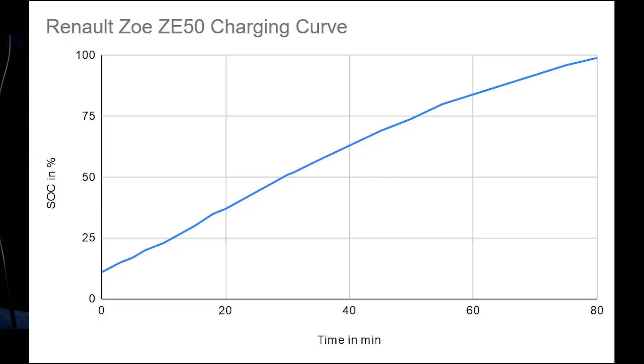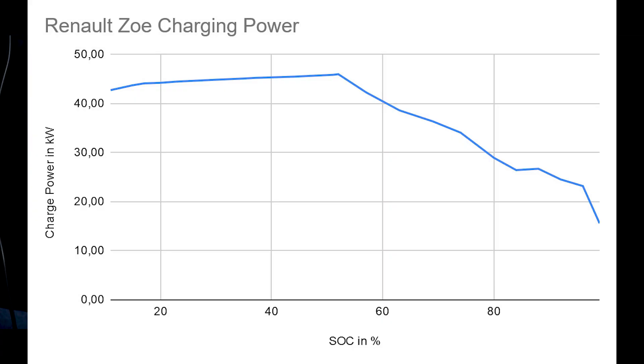Let's look at the charging curve. The first one is time in minutes and state of charge. You can see it really gradually goes up, it's not charging so strong and then charging slow, it's going very nicely. The next graph is the charging power and state of charge.